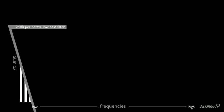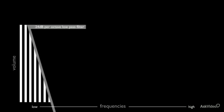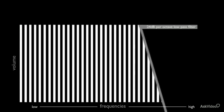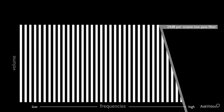24 decibels per octave means there is a 24 decibel drop in volume for every octave of frequencies attenuated by the filter. 24 decibels per octave is a steep slope. Fewer of the frequencies cut off are heard after they are cut off.